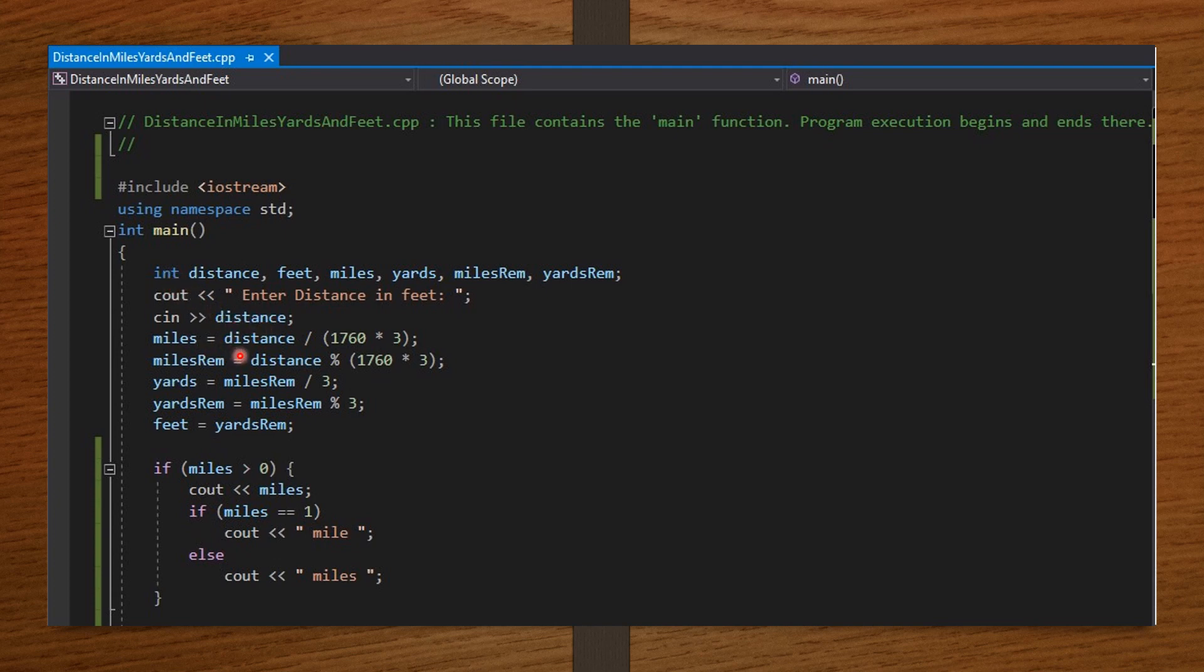miles = distance / (1760 * 3). We should convert the user's distance into miles. milesRem = distance % (1760 * 3). Find the remainder after converting to miles. Then, yards = milesRem / 3. Convert the remainder of the miles to yards. Then, from there, yardsRem = milesRem % 3. Find the remainder after converting to yards. Then, feet = yardsRem. Assign the remainder of the yards to feet.